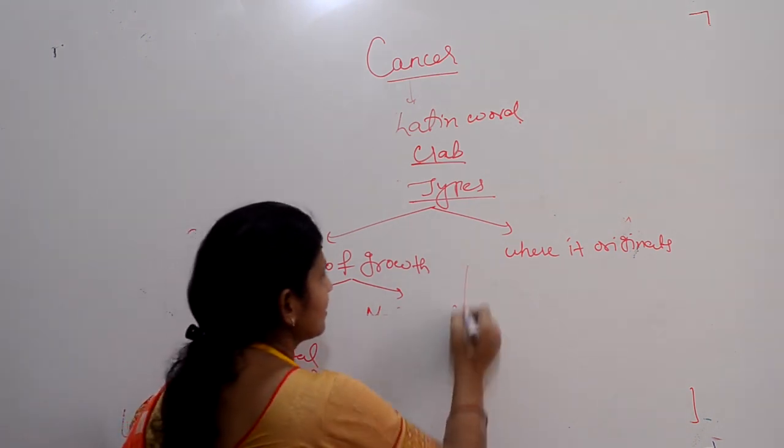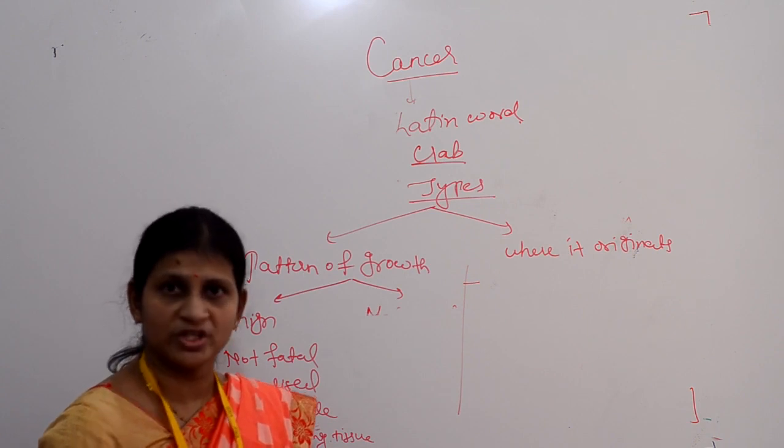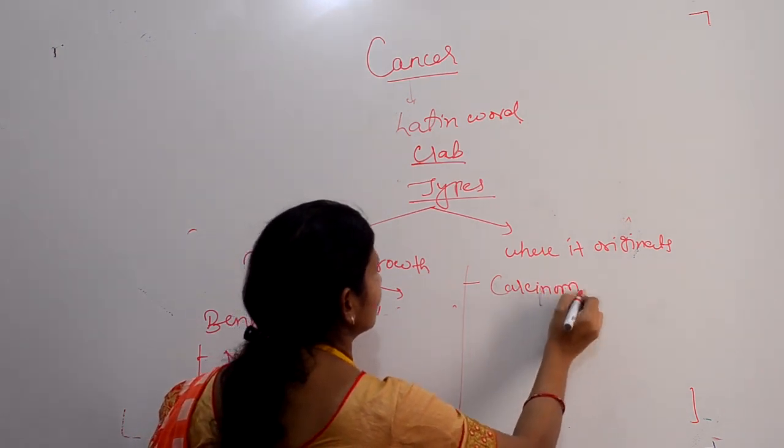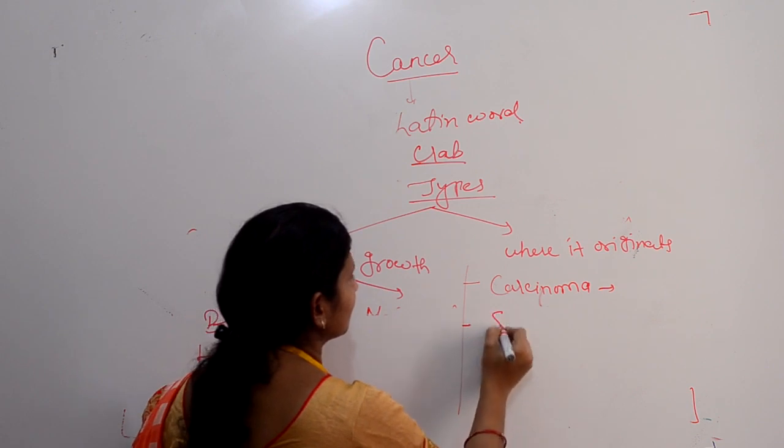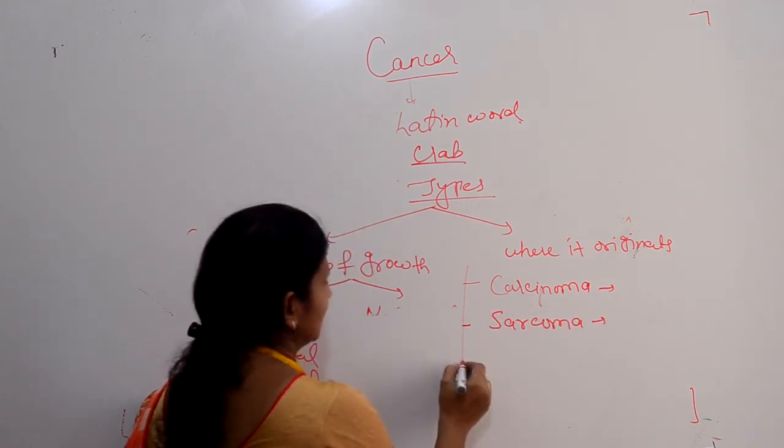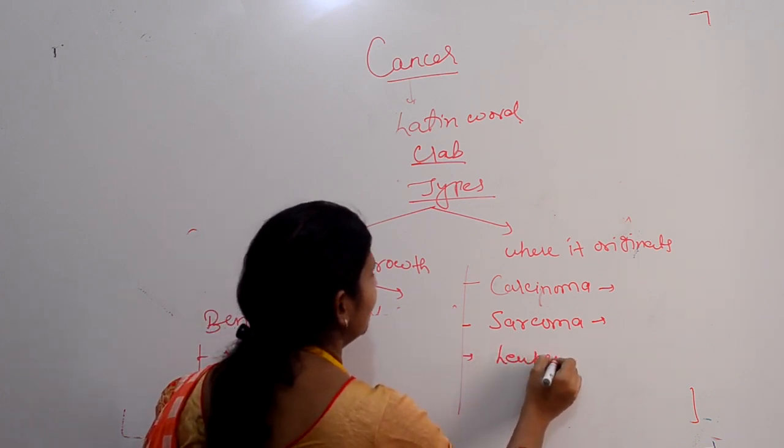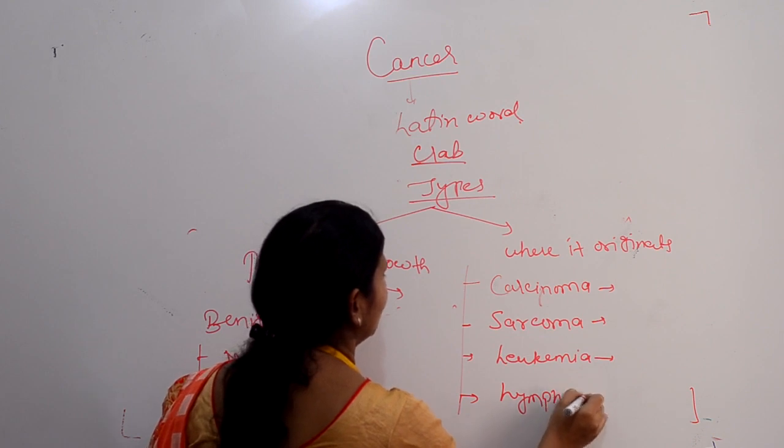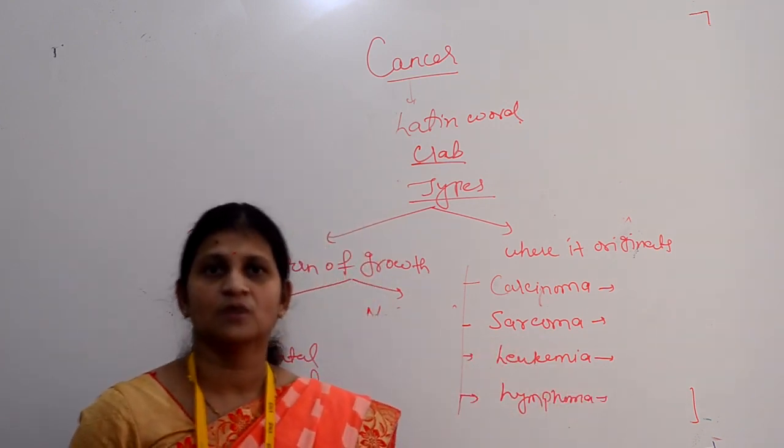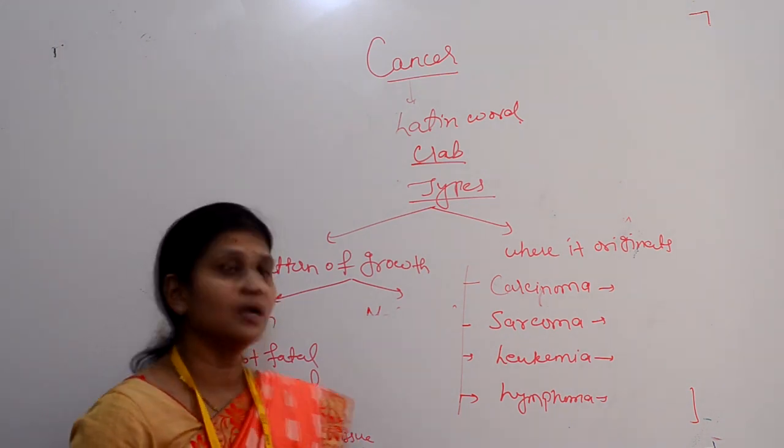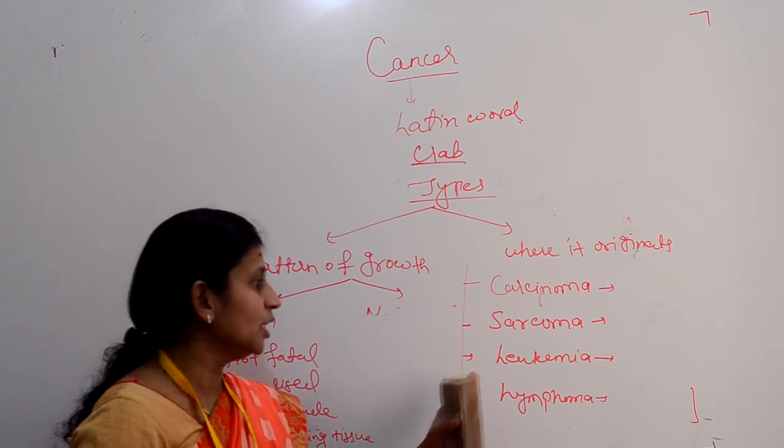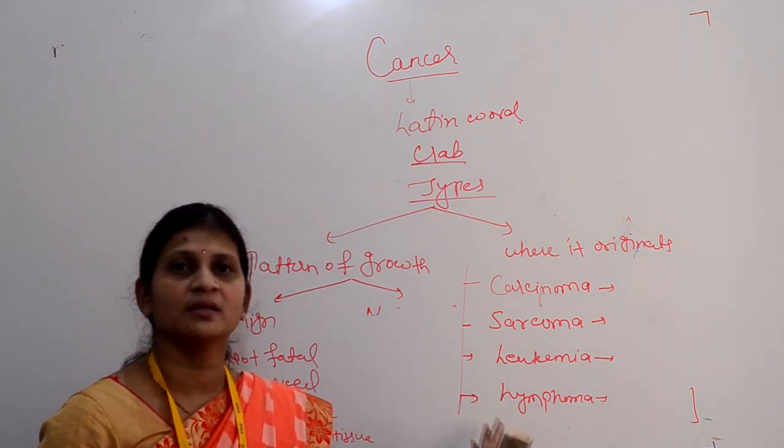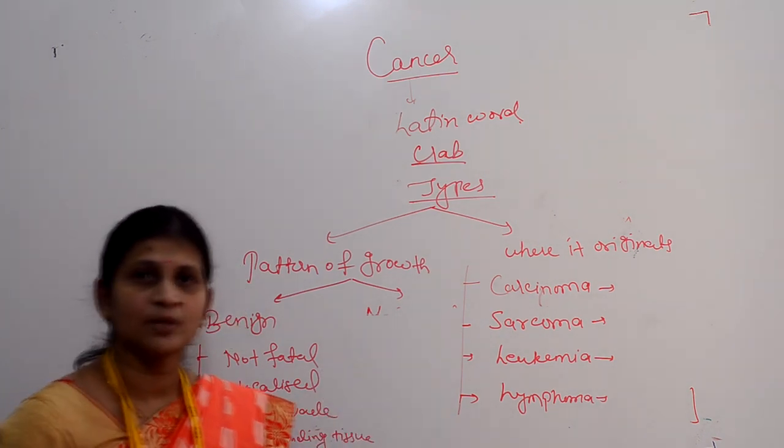Next classification based on where it originates: first is carcinoma, second is sarcoma, third is leukemia, and fourth is lymphoma. Carcinoma is cancer of epithelial tissue. Sarcoma is cancer of connective and supportive tissues. Leukemia is sometimes termed as liquid cancer or blood cancer. Lymphoma is cancer of lymphatic tissues.